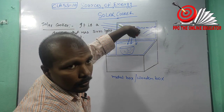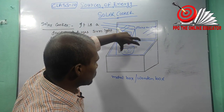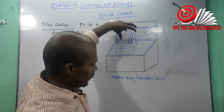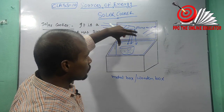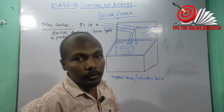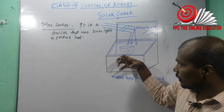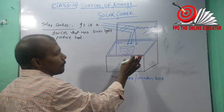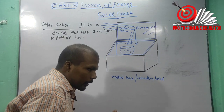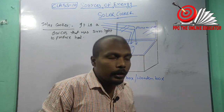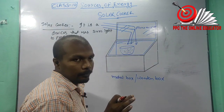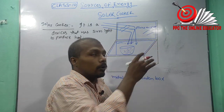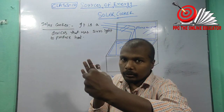Whatever sunlight strikes the glass, there are many rays, and they are directed towards the box. The condition is that the solar cooker is placed outside the house in such a way that the reflector faces the sun. We have to place the reflector in the direction of the sun.